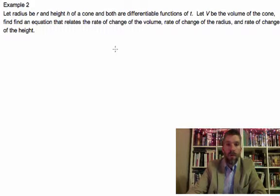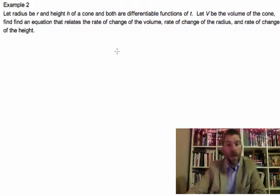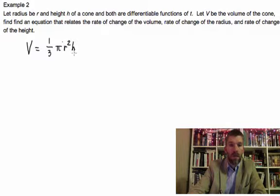So we want volume of a cone. Volume of a cone, anybody remember that? I think it's something like this, correct me if I'm wrong. I have been wrong on an occasion or two. So one-third pi r squared h, I believe, is the volume of a cone.